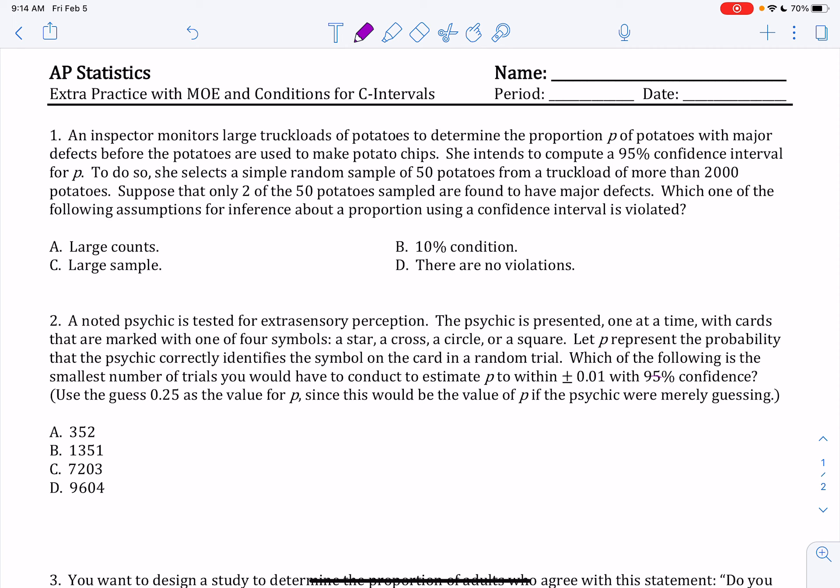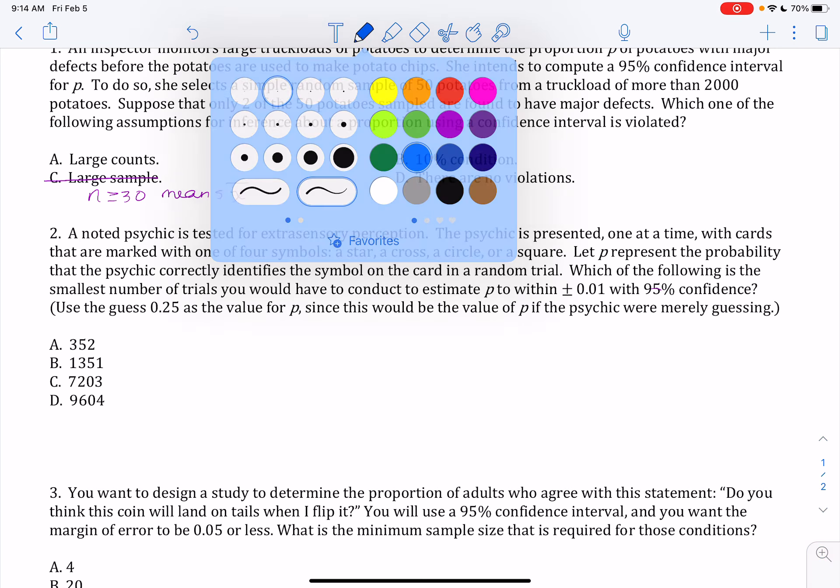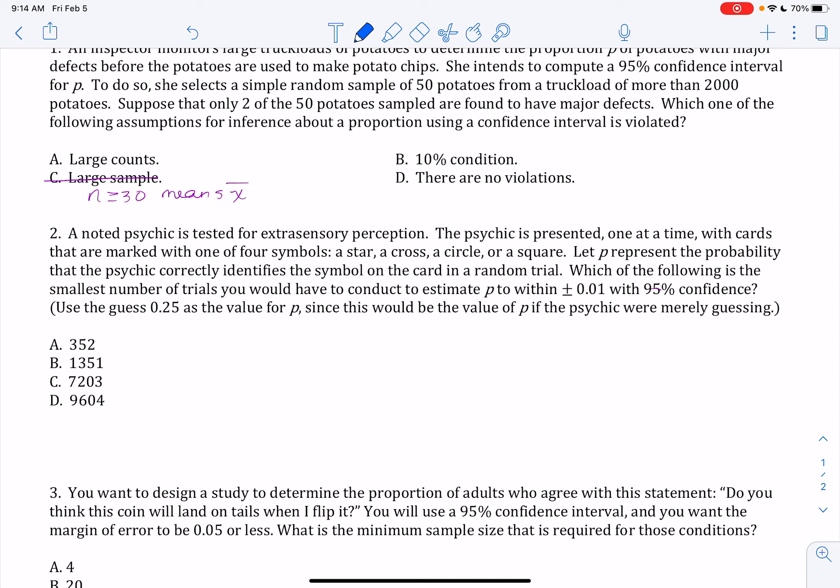In this case, large sample would not apply. Large sample condition where n has to be at least 30 only applies for means, x bar. So in this case, that is not the correct answer. The 10% condition is usually pretty easy to verify. We've got 50 potatoes from a truckload of more than 2,000. 50 is less than 10% of 2,000, so we're good. This is met, which means that it is not violated.